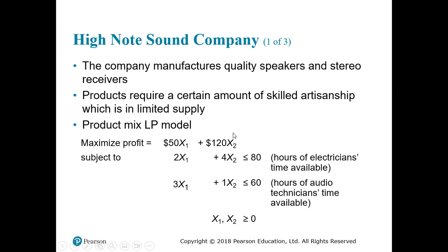At the beginning of the month, you want to find the optimal quantity of x1 and x2 to maximize profit given the constraints. The sales department says the profit on x1 is 50 and on x2 is 120. Five days later they say it's actually 55 and 130, or maybe 30 and 110. We've already worked out the optimal quantity based on 50 and 120 and programmed our machines accordingly. The question is: if the profit changes, is that optimal quantity still valid, or do we need to redo the linear programming?